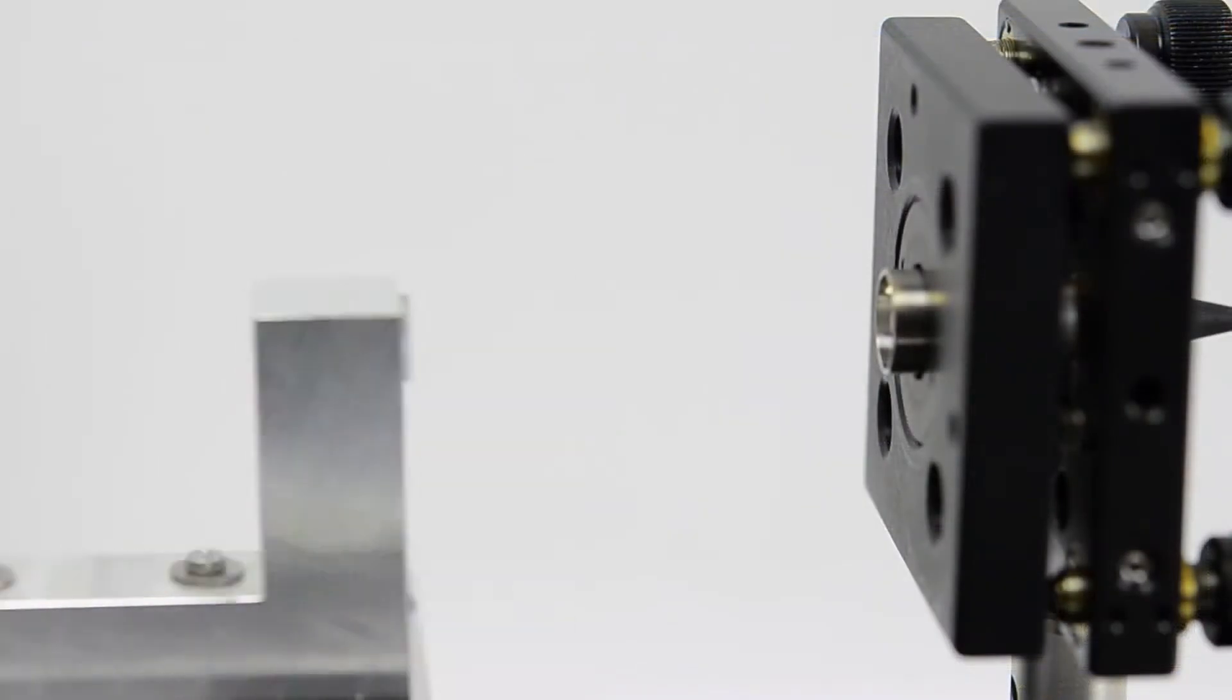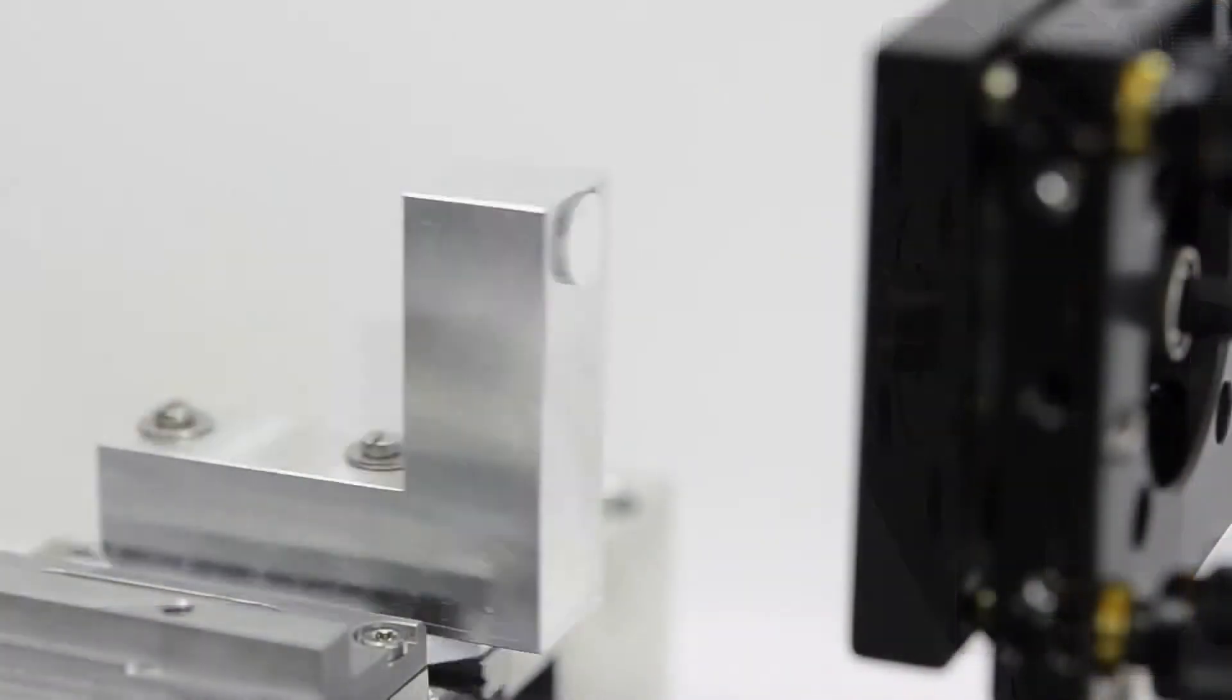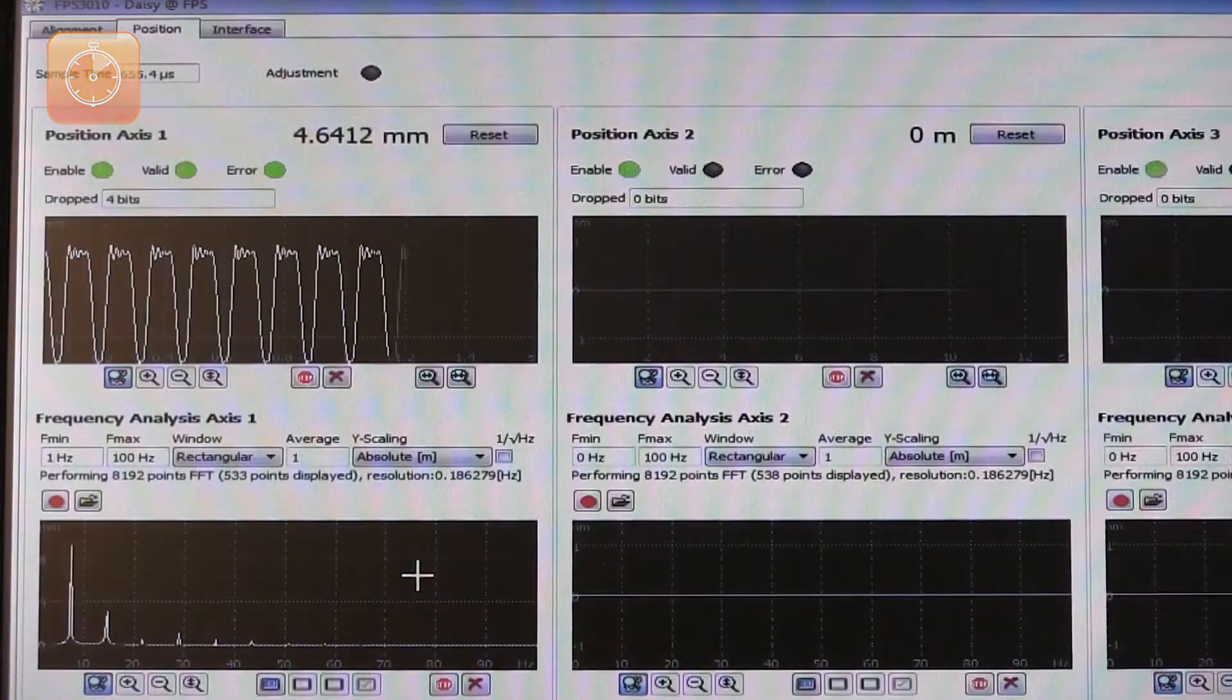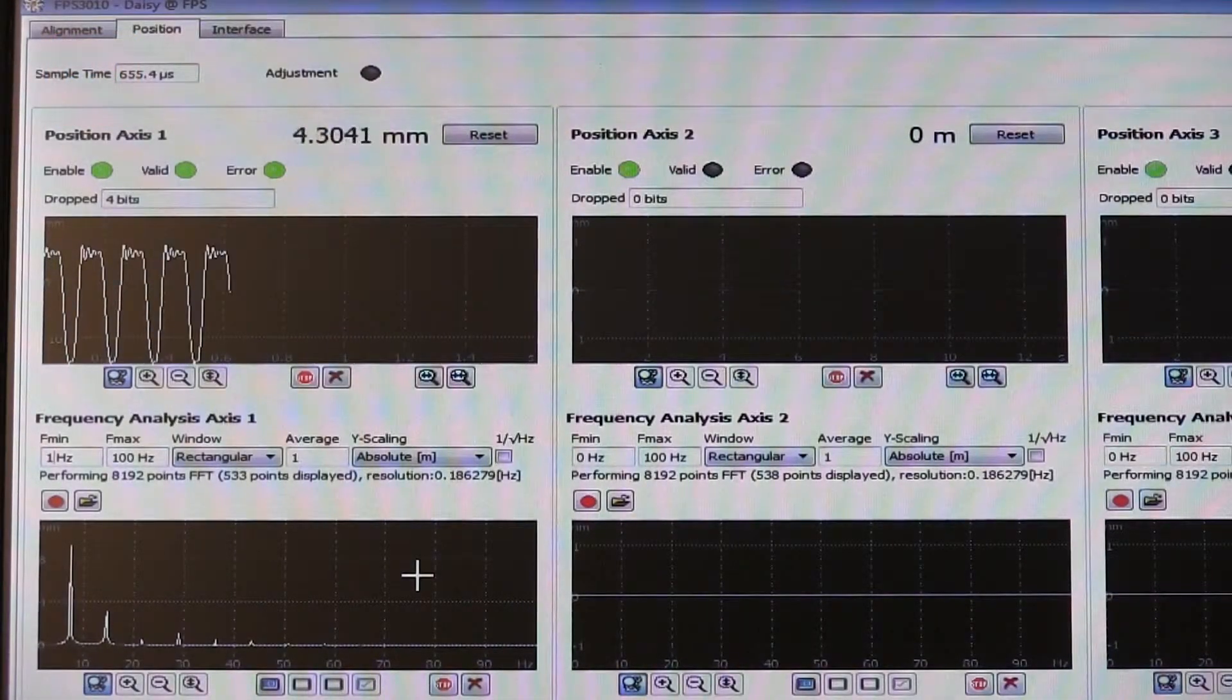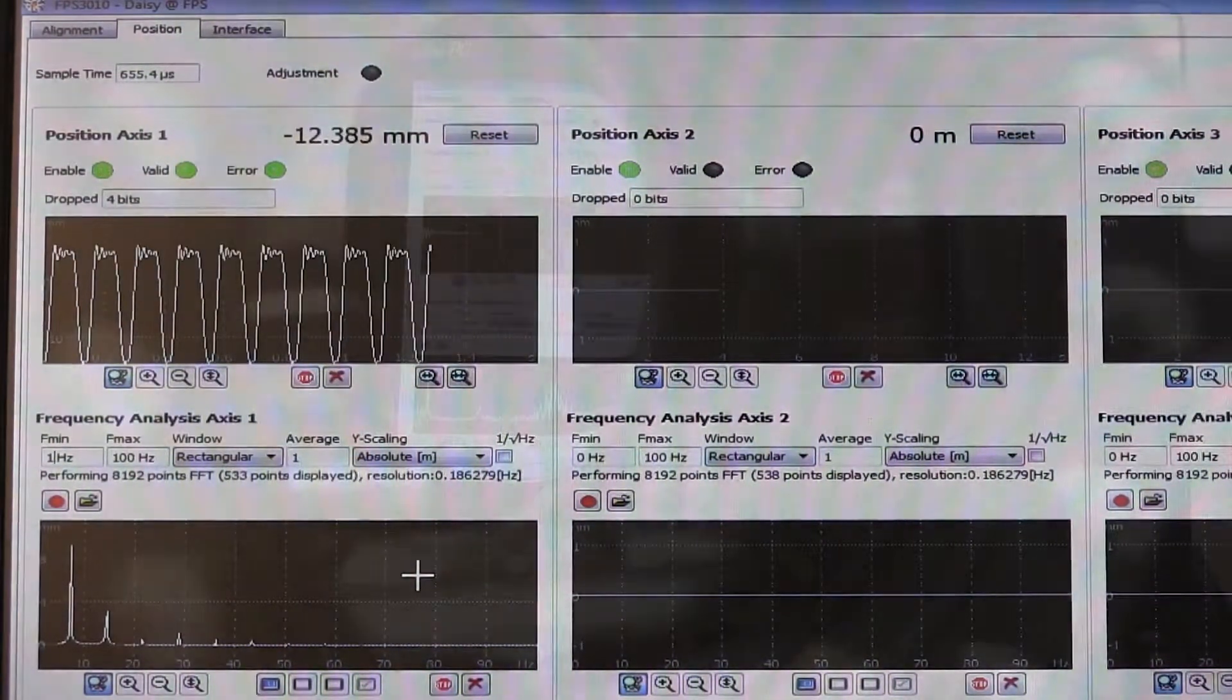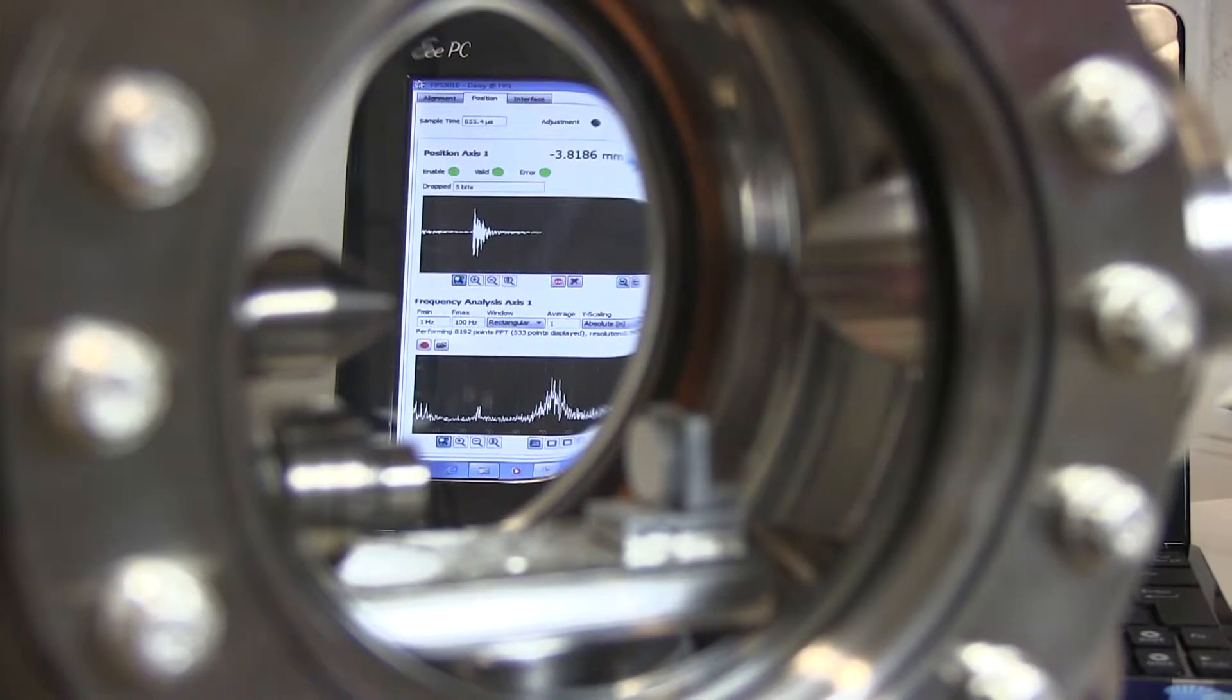Thanks to its powerful digital signal processing, FPS sensors measure at 10 MHz bandwidth, compatible with target velocities of up to one meter per second. Picometer resolution and virtually latency-free signal output are maintained at any one time.